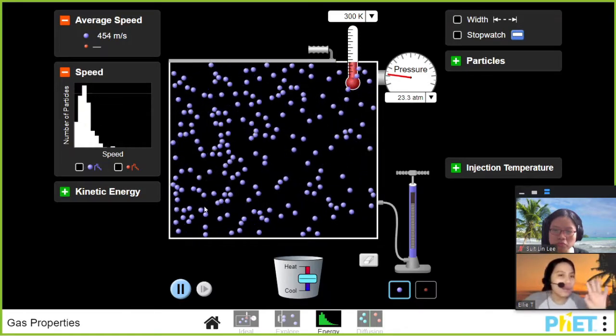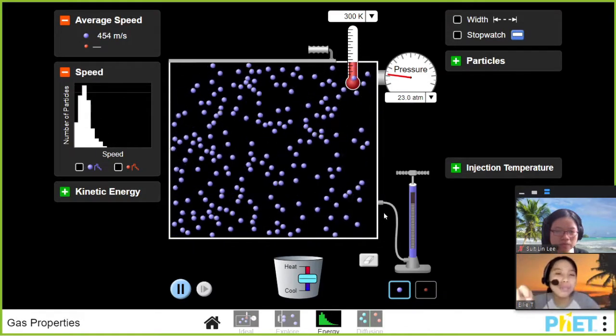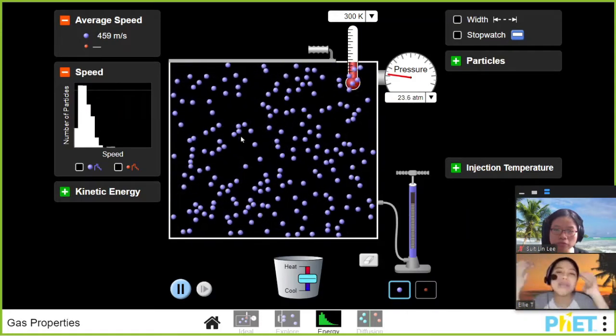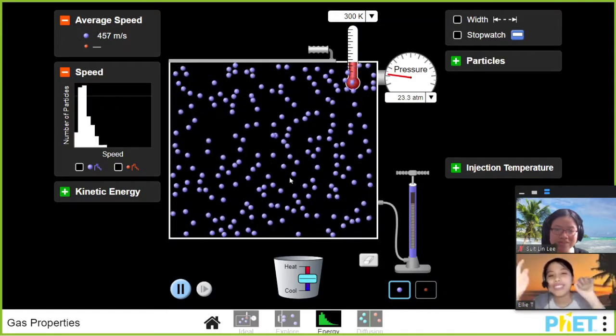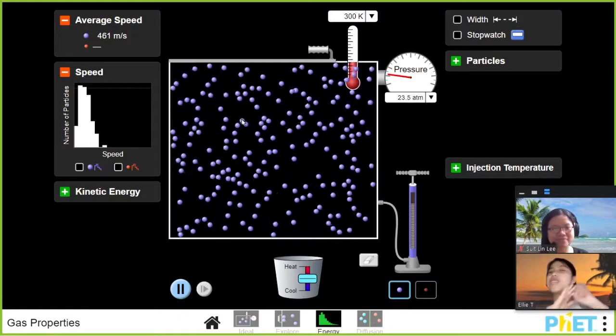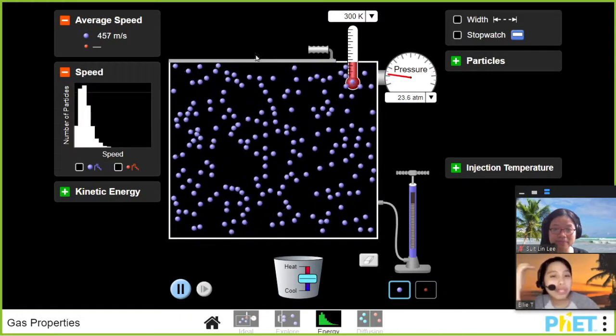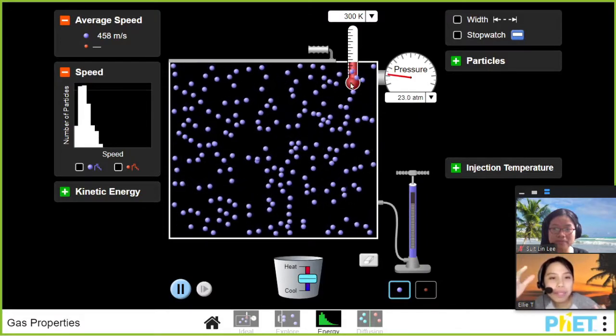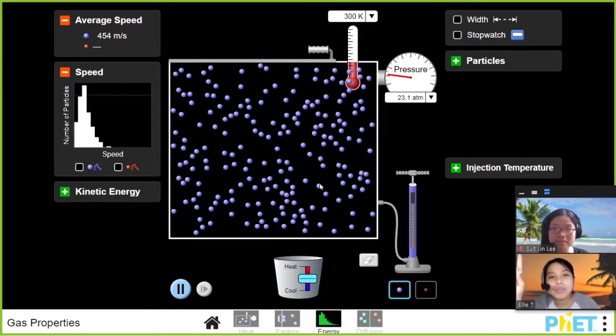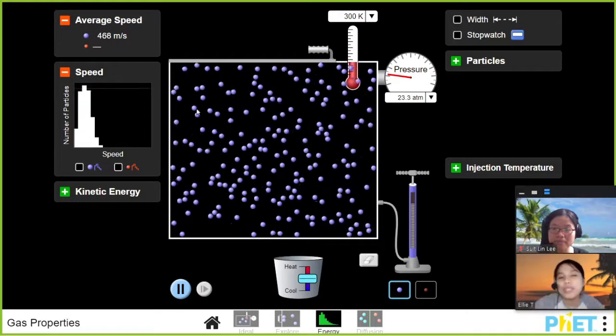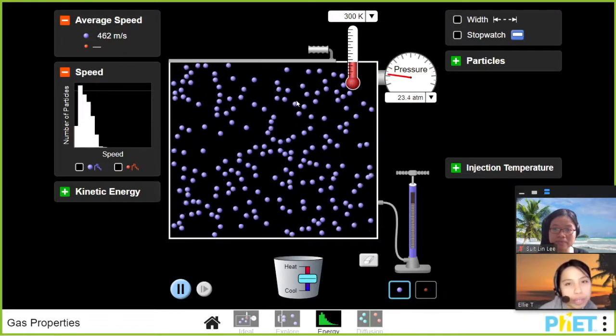So the first thing I want you to pay attention is observe the movement of all these blue-colored particles. Assume there's many, many. This one is two liter already. Gas actually got many, many particles. So observe the particles. What are some words you can use to describe the movement of these particles? Move very fast? What is it? Think about it. What is the movement like?